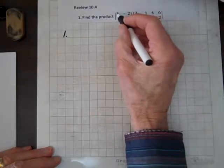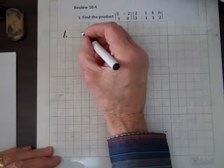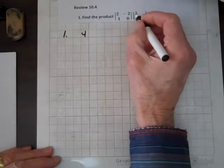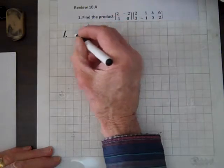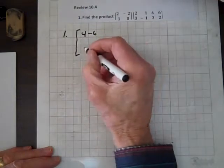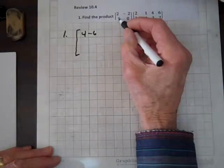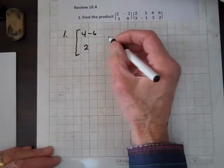So for the first entry, we've got 2 times 2 is 4, and minus 2 times 3 is minus 6. And then for the entry below, we've got 1 times 2 is 2, and 0 times 3 is 0.